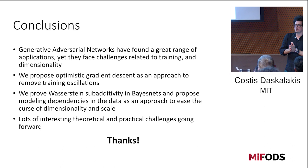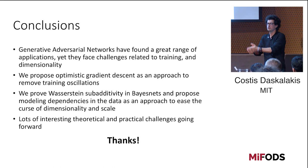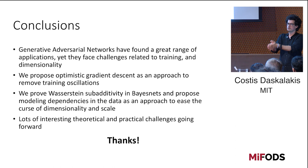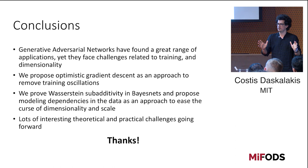To conclude, generative adversarial networks have found many applications, and there is a lot of excitement and debate about what exactly they're doing. What we propose here is taking a theoretical perspective to either improve the current training procedure for current architectures, or to propose methods to architect these things better by leveraging knowledge about the underlying distribution. There are lots of interesting open problems here.